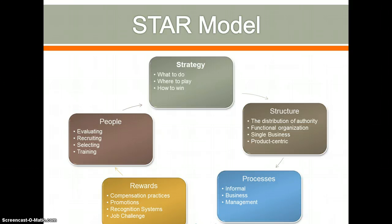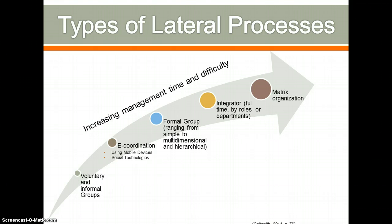All of these areas on the star model work together to create a strong organization. Lateral processes are information and design processes that coordinate activities spread out across different organizational units — they provide mechanisms of decentralizing general management decisions. In our preschool we have these lateral processes operating every day, and what we need to do as administrators is recognize these processes and then work to strengthen them.